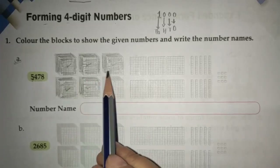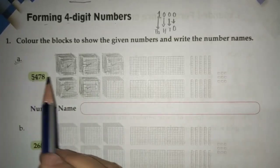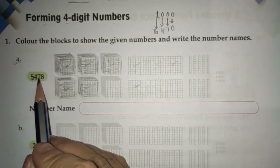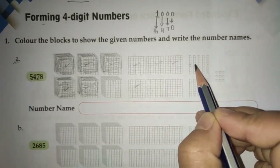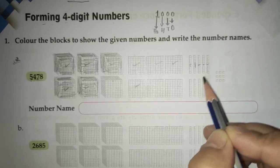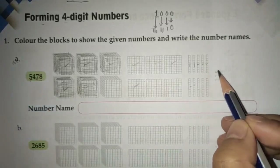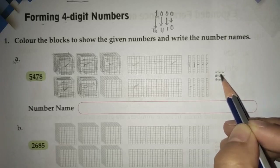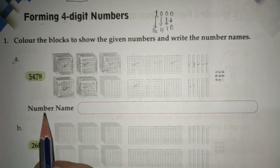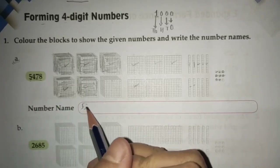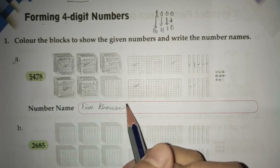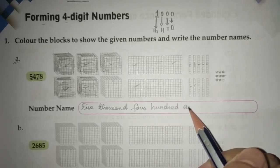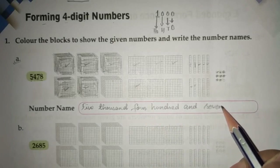I have colored five blocks for the thousands position. After that, the hundreds position is 400, so you will color four boxes. In the tens position there is seven, so you color seven boxes. In the ones position there is eight, so you color eight boxes. After coloring in this manner, you have to write the number name: five thousand four hundred and seventy-eight.